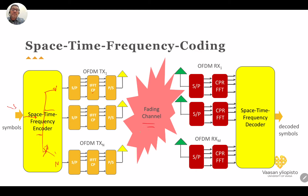On the receiver side, we have the fading channel, then serial-to-parallel conversion, cyclic prefix removal, and the FFT (the inverse of the IFFT). We get parallel outputs, and inside we have the space-time-frequency decoder, giving us our decoded outputs. This provides full freedom — three degrees of freedom: space, time, and frequency.